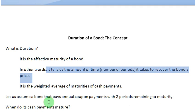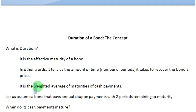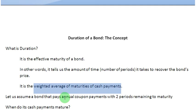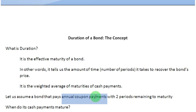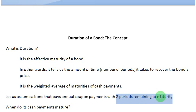For the purpose of computing duration, what we need to do is to find out the weighted average of maturities of the cash payments associated with the bond. Let us assume a bond that pays us annual coupon payments and it has two more time periods remaining to mature.